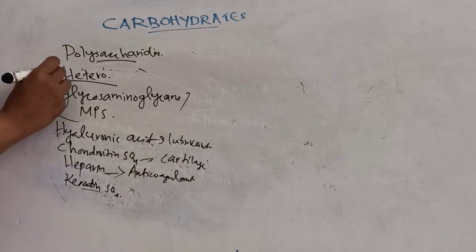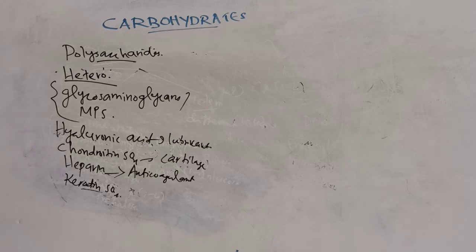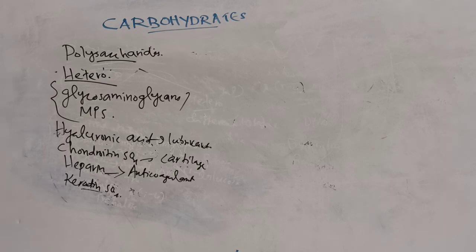So, carbohydrates are hydrates of carbon containing carbon, hydrogen, and oxygen, defined chemically as aldehyde or ketone derivatives of the higher polyhydric alcohols or compounds which yield these derivatives on hydrolysis. Thank you for watching.